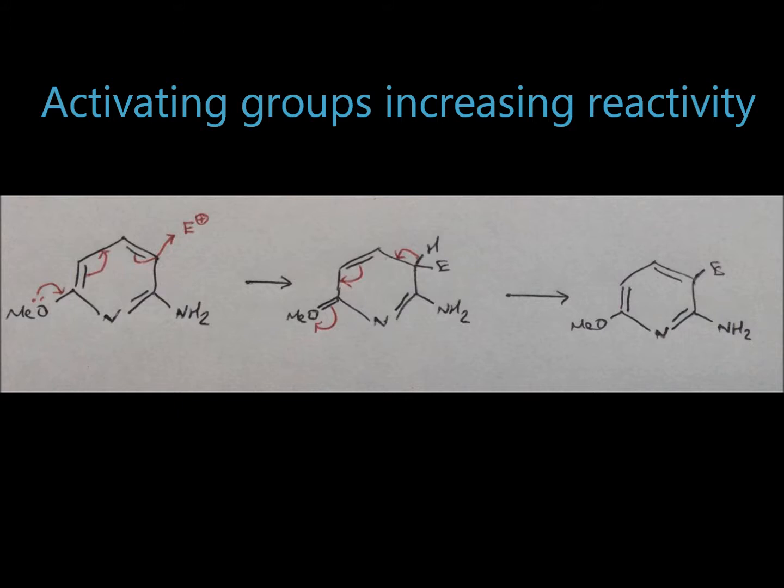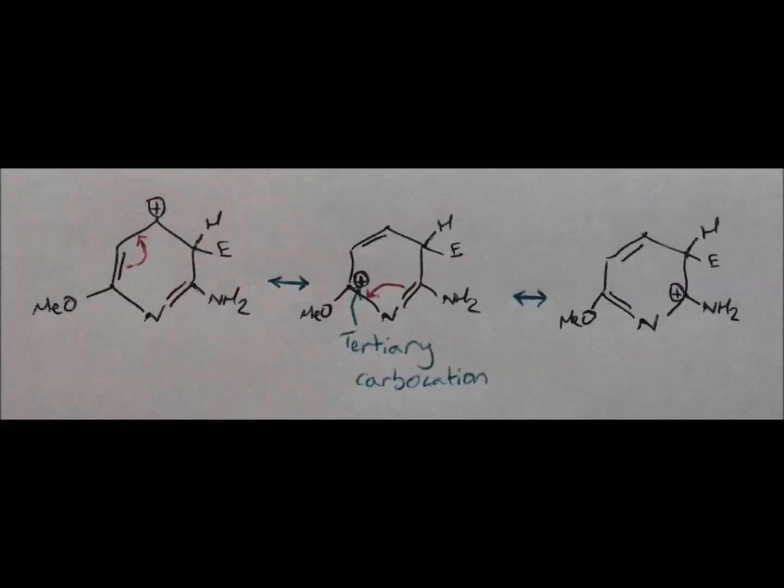This is due to the activating group making the pyridine derivative more electron dense. This allows electrophilic substitution at ortho and para sites. This is due to the tertiary carbocation seen in the resonance structures that makes electrophilic substitution at these sites more favourable.